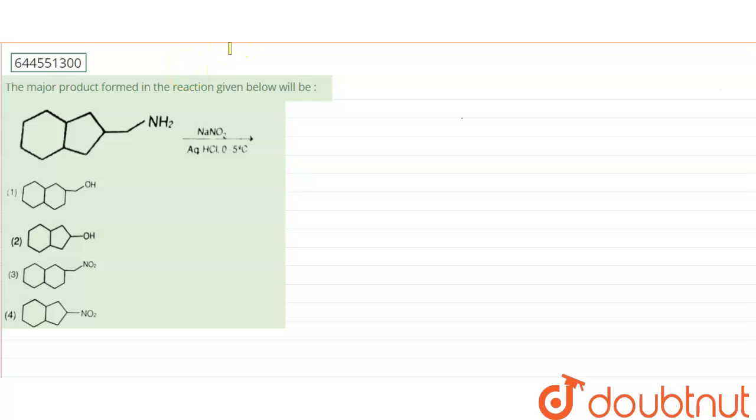In this question, we have the reagent NaNO2 and HCl. What will this give? It will give HNO2. This is very unstable, so we make this just by the time of our reaction.